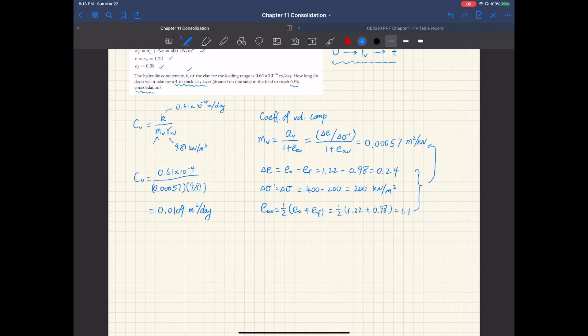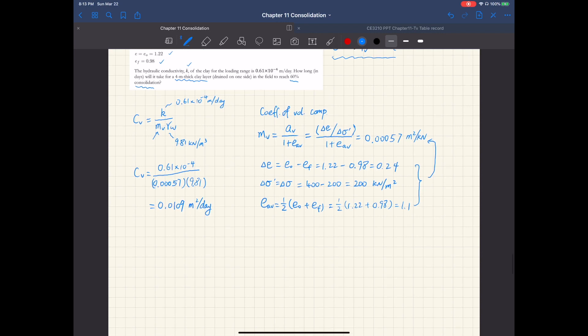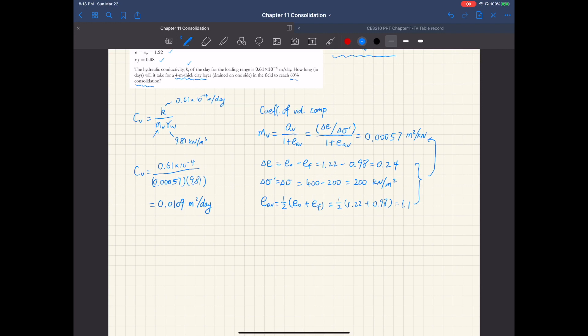So now we have the coefficient of consolidation. To calculate the time, we start from the given target average degree of consolidation U of 60%.